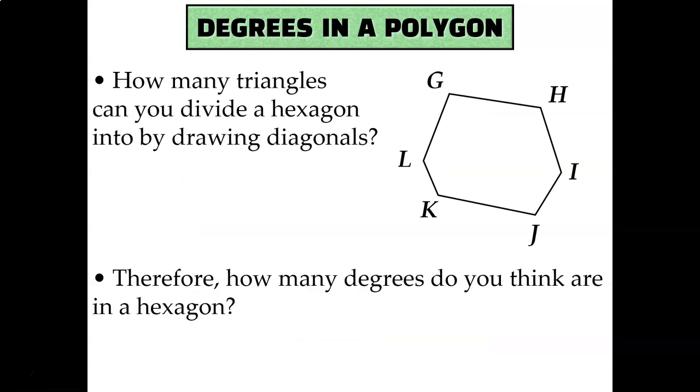What about a hexagon? From G to K, G to J, and G to I, I end up with a total of four triangles that have been created by these diagonals. So 4 times 180 gives me my total of 720 degrees.